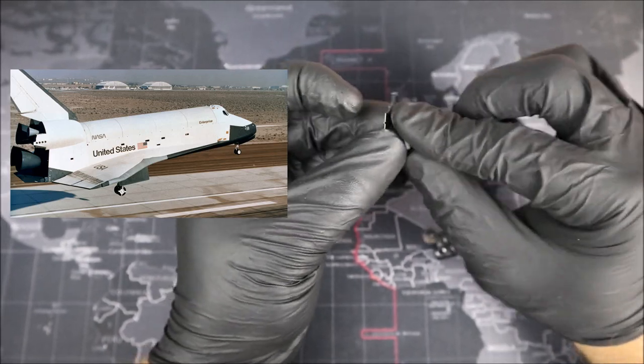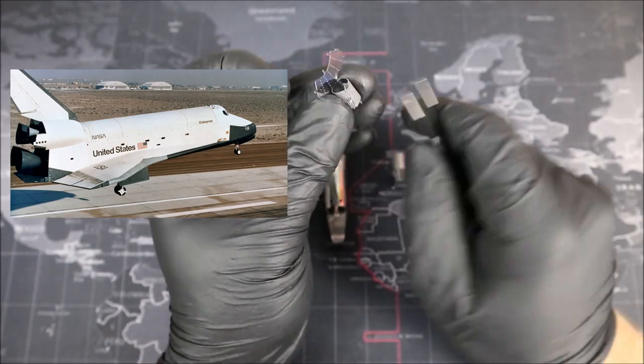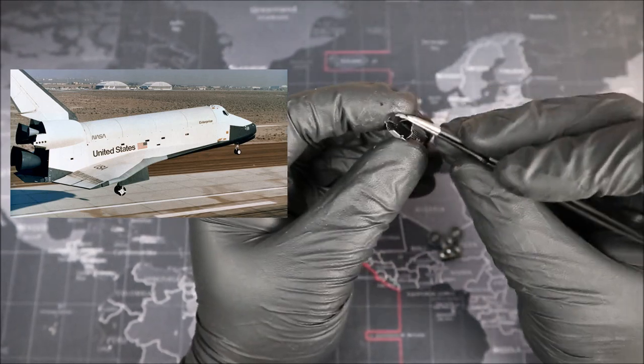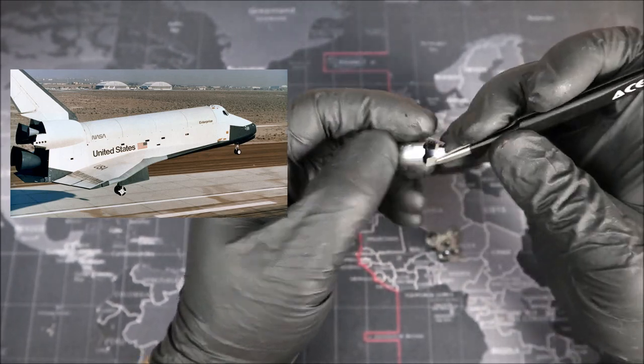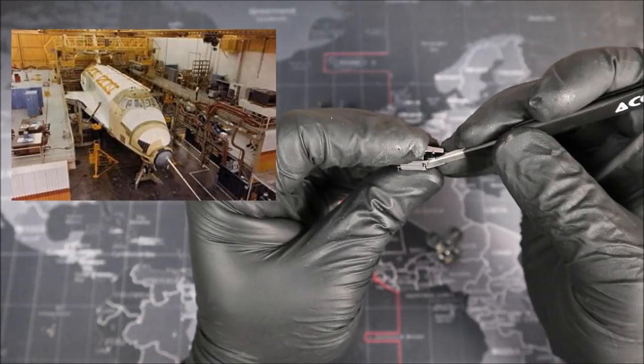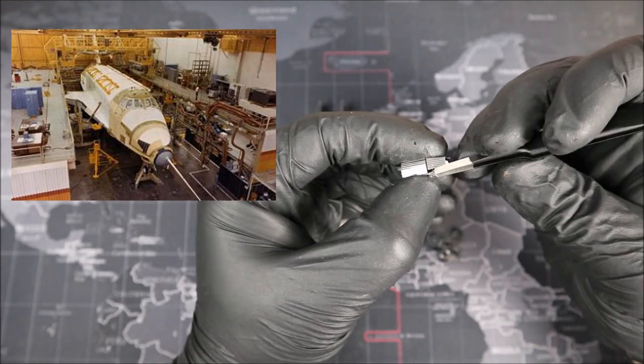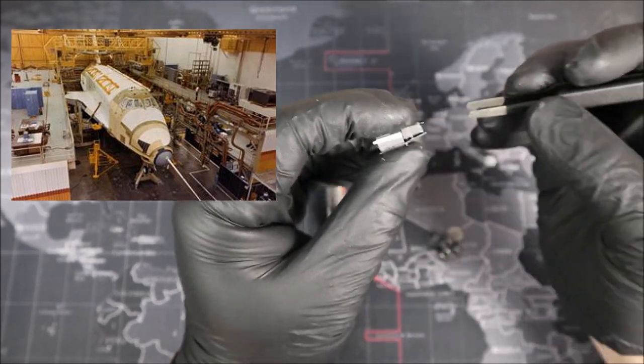The Space Shuttle Enterprise was the first orbiter of the Space Shuttle Systems built for NASA. Construction began on June 4th, 1974, and the name was originally planned to be the Constitution, set to be unveiled on Constitution Day, September 17th, 1976. But the fans of Star Trek had other plans.